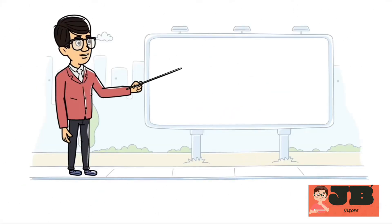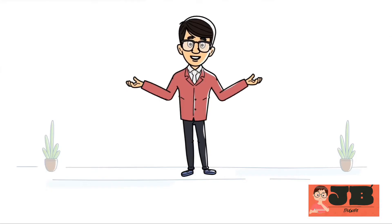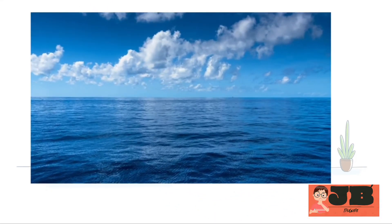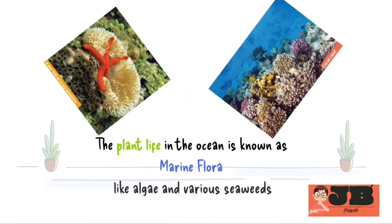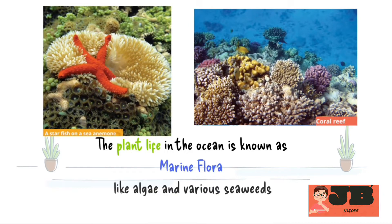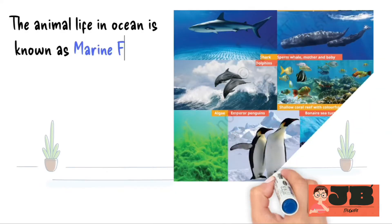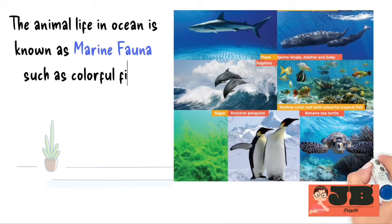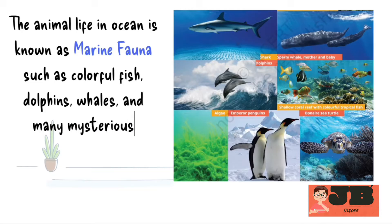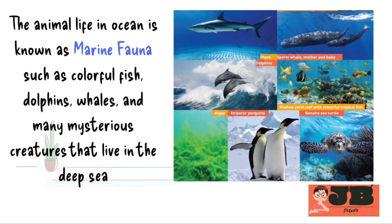Next, let's understand about marine life and biodiversity. The oceans are home to a wide variety of life. The plant life in the ocean is known as marine flora, and includes tiny plants called algae and various seaweeds. The animal life in the ocean is known as marine fauna, and includes thousands of species such as colorful fish, dolphins, whales, and many mysterious creatures that live in the deep sea. Each part of the ocean, from the bright surface to the dark depths, is full of different life forms.